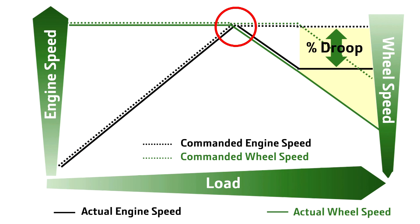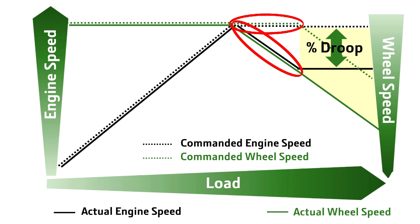The engine and transmission will continue to shift down and throttle up as the load continues to increase until the engine reaches the maximum engine speed. At this point, if the load increases even more, the engine will remain commanded to maximum speed. But the actual engine speed is decreasing because it is being lugged down by the load. The transmission will not shift down anymore, which means we are also losing wheel speed.